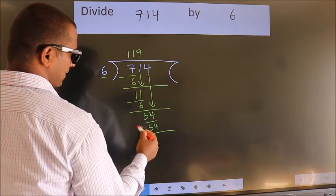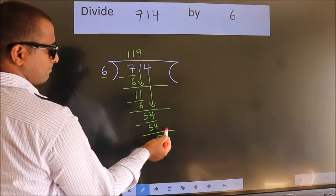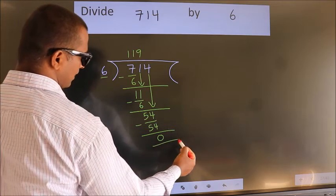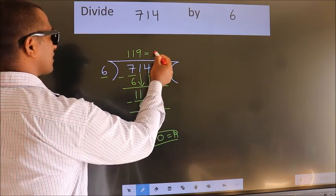Now we subtract. We get 0. No more numbers to bring it down. So we stop here. This is our remainder. This is our quotient.